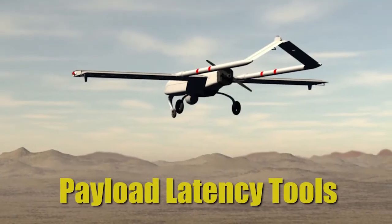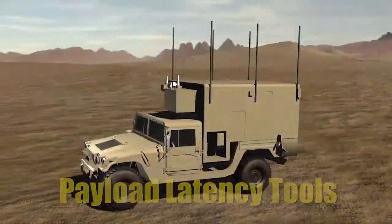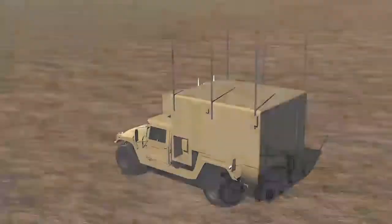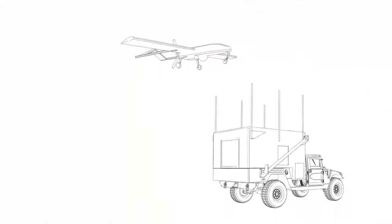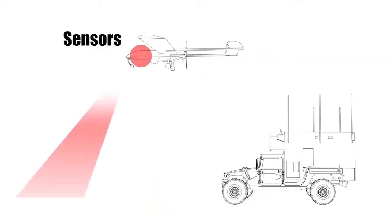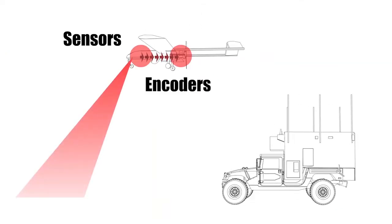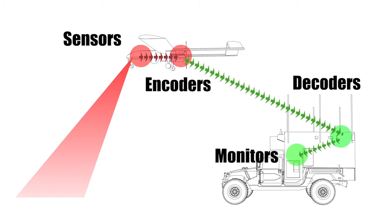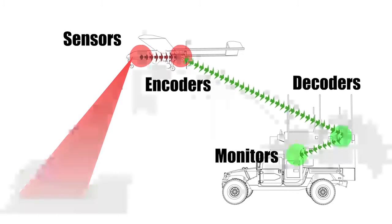The Payload Latency Tools are a collection of tools that measure the latency introduced into the video chain by each of the various components, including the sensors, encoders, decoders, and monitors. Understanding component latency provides insight to the overall system latency, which is crucial to ensuring mission success.